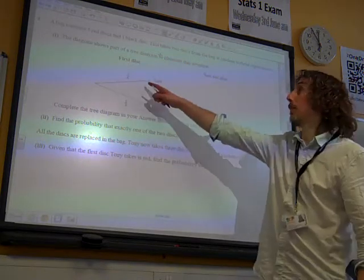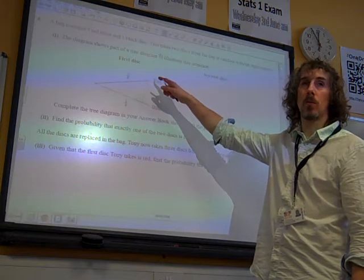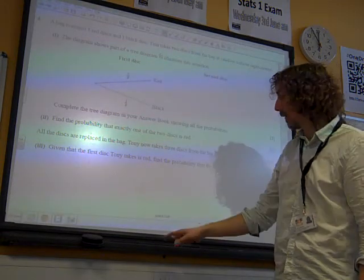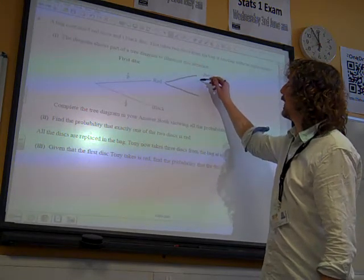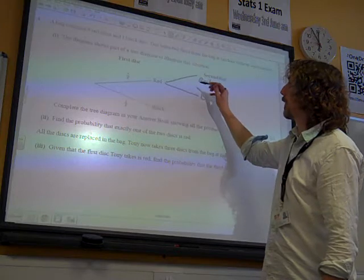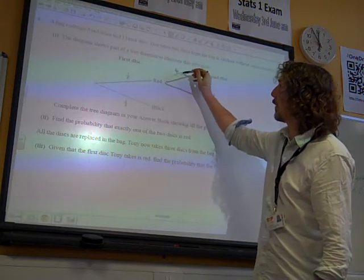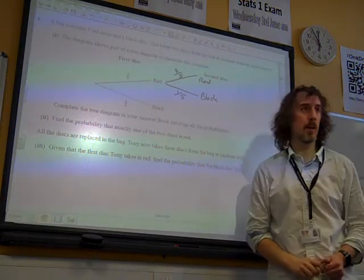So, up here the first disc was red, so we're left with four red and one black. The next selection could be either red or black. And the probability of it being red is four out of the remaining five and one-fifth for it being black. That was easy enough.